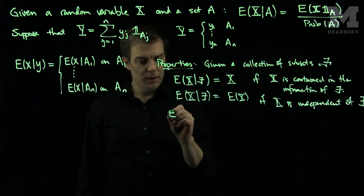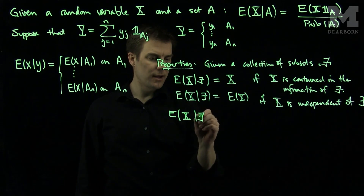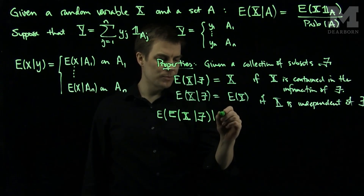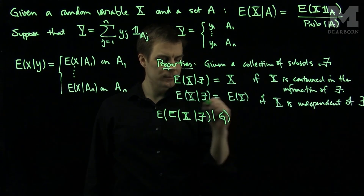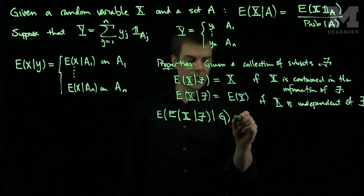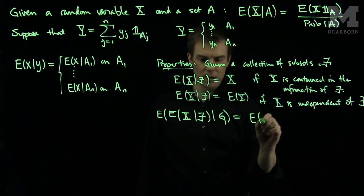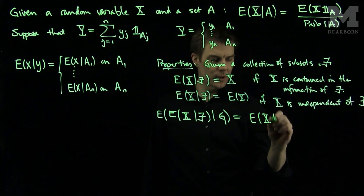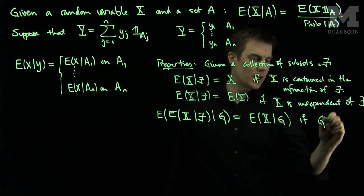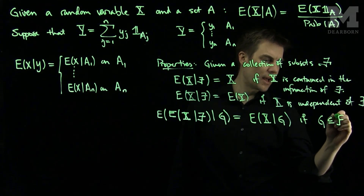Then we have the tower property: the conditional expectation of the conditional expectation of X given F, conditioned on G, equals the conditional expectation of X given G, if G contains a smaller amount of information than F.